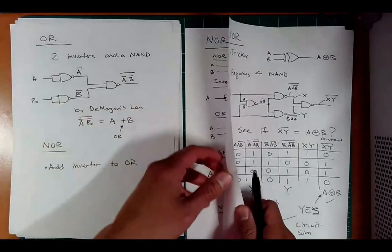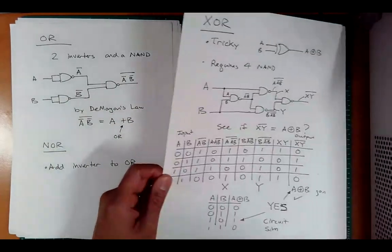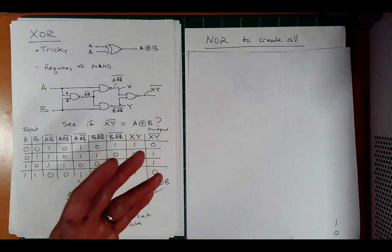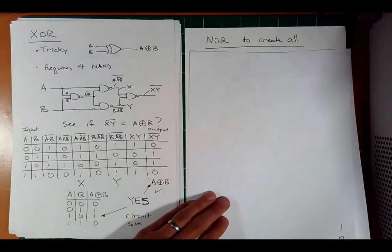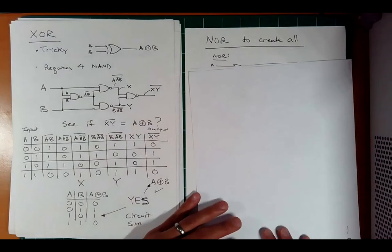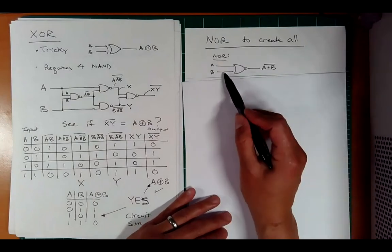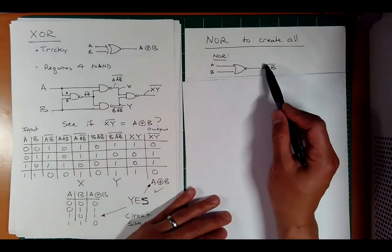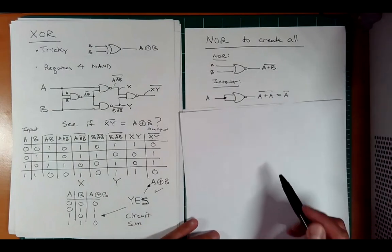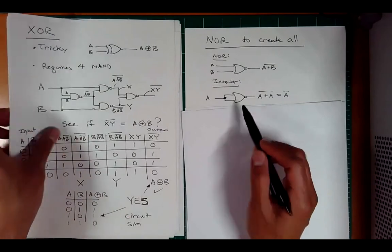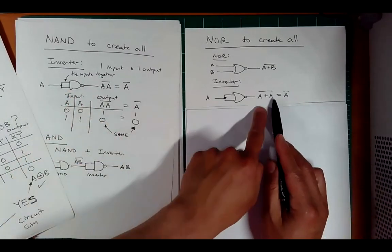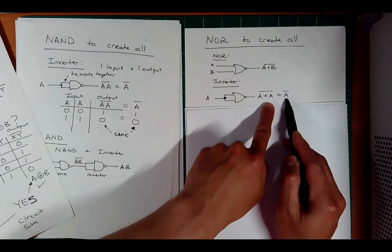Now let's run through NOR gates — the same idea applies. You can utilize NOR gates to create all logic gates, very similar to how we used NAND gates. A NOR gate is A plus B with a bar. For an inverter, you tie the two inputs together, just as with the NAND gate, and it creates inversion behavior.